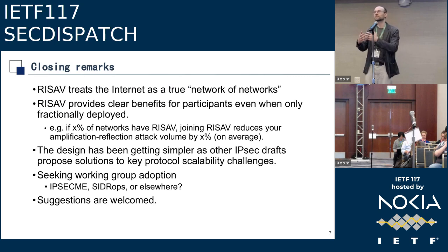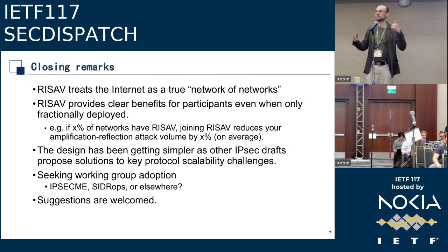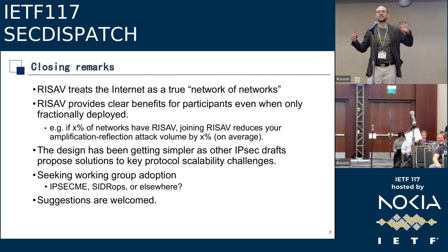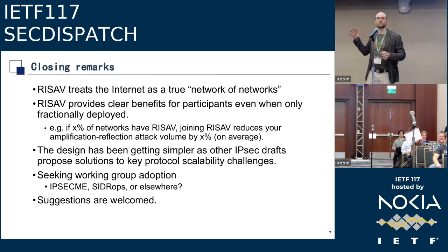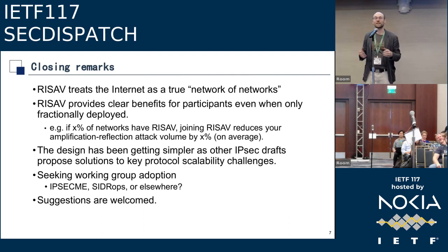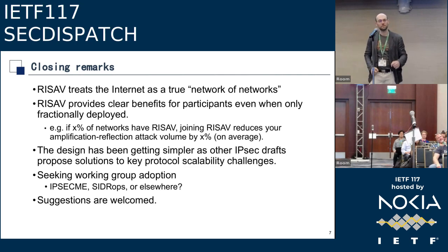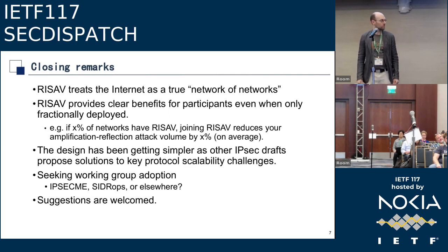Kathleen summarizes the dispatch outcomes: the first draft on X.509 client certificates was dispatched to LAMPS. The second draft on the hybrid signature method requires some AD action for discussion with the CFRG chairs to begin with. The RESAV draft from Ben — create a new mailing list is the action, with SavNet as a possibility. And Justin's draft on WIMSE has a new mailing list. The chair says to put it on the SecDispatch mailing list as well. Thank you all.